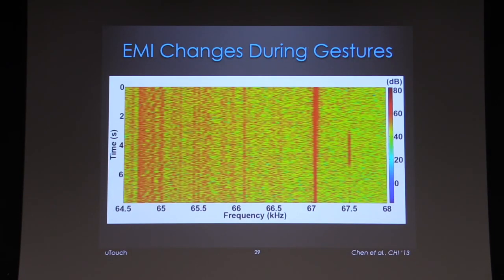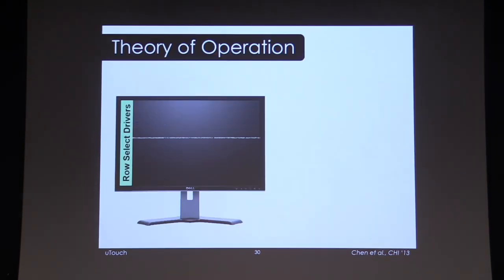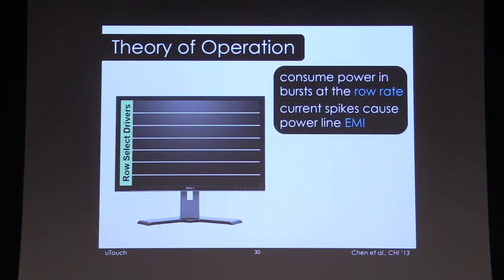If we look at that noise, the red line that goes all the way top to bottom is noise produced whenever the LCD is on, and this is the time when the user is touching the display. An LCD is just a grid — an array of pixels — and the rows of the LCD get driven sequentially. So energy is consumed at that row rate, which produces EMI on the power line at the row rate.